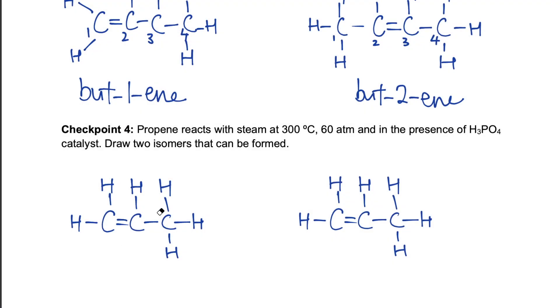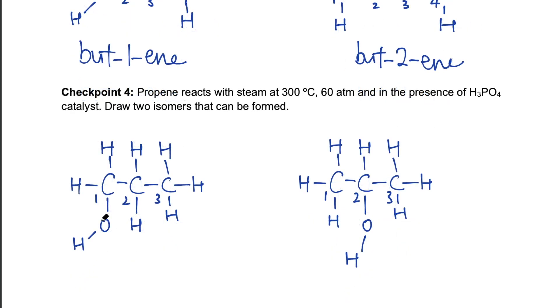When we do addition of steam, we can add the H and OH across a double bond. So we'll break the double bond. We'll have an OH here, and a H here. So this comes from the water molecule that is added H2O. We could also have this variation, in which the H goes to the end, and the OH comes in the middle. So this is propanol, right? To be specific, propan-1-ol, because the hydroxyl functional group is on carbon-1. And this is propan-2-ol, because the hydroxyl functional group is on carbon number 2.